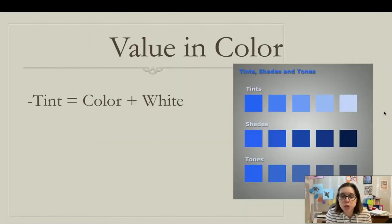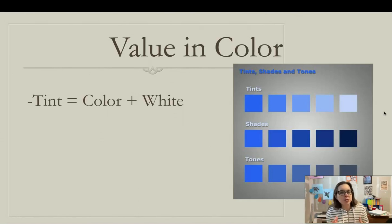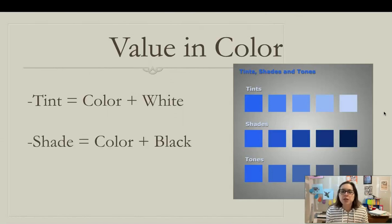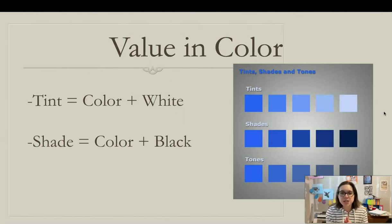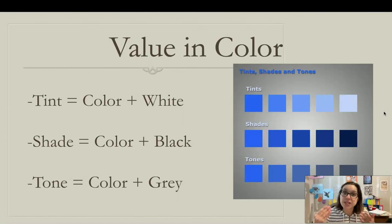There are three important words we use when talking about value and color: tints, tones, and shades. A tint is a color plus white — this makes a color lighter. A shade is color plus black — this makes a color darker. And a tone is color plus gray — this makes the color less intense.